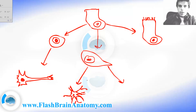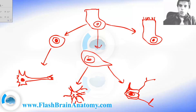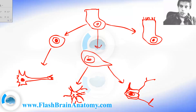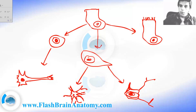Then we have the oligodendrocytes, which look something like this. The function of the oligodendrocytes is to electrically insulate the axon and support it, which means you need fewer action potentials and depolarizations to happen over the same distance. So practically, it increases the speed of transmitting the signal.